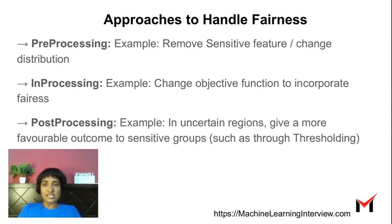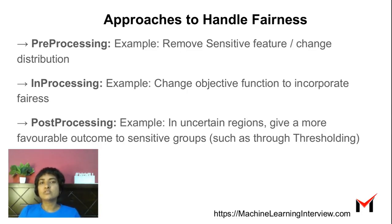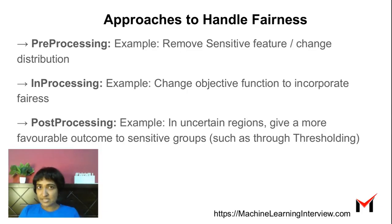In-processing approaches, for instance, we could change the objective function to incorporate a fairness criterion. Or we could use post-processing techniques where, in uncertain regions, we could give a more favorable outcome to sensitive groups through some form of thresholding or other post-processing methods. But in order to use one of these techniques, we need to first understand that our models are biased or are not fair.